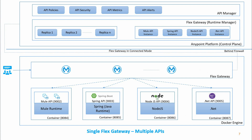One architecture option is to use a single Flex Gateway for multiple APIs. You can set up a single Flex Gateway that manages APIs written in multiple technologies — MuleSoft, Spring Boot, NodeJS, and .NET. This diagram shows the Flex Gateway set up in connected mode. You can also set up multiple replicas of the same Flex Gateway to enable scaling and high availability, which improves performance. The Flex Gateway is registered in the Anypoint platform, and a single Flex Gateway can be used for multiple APIs regardless of technology.